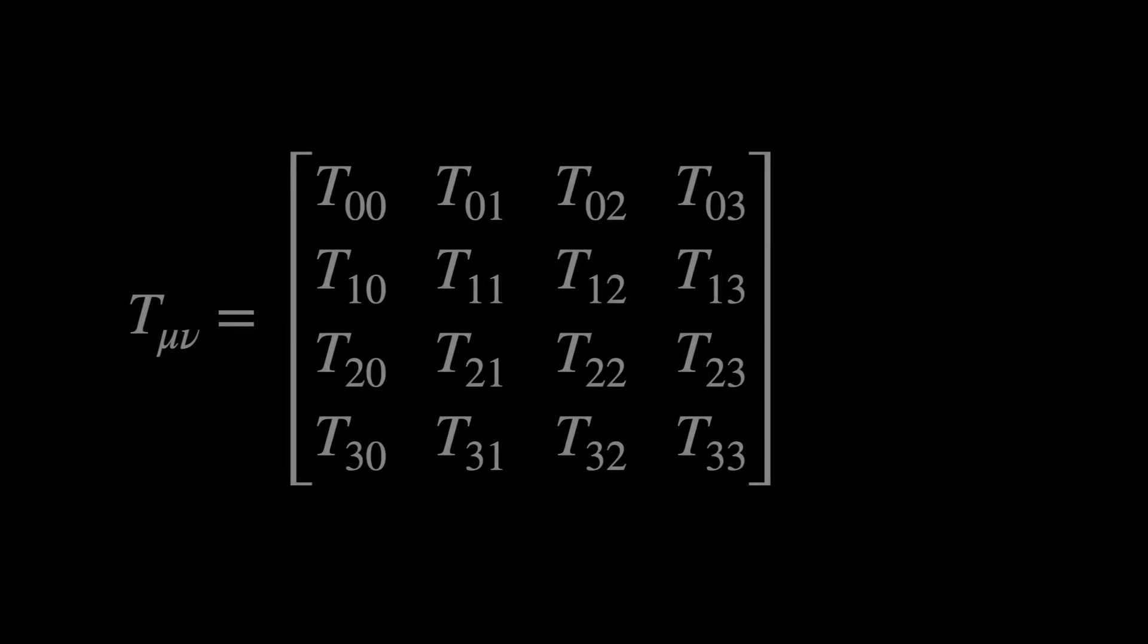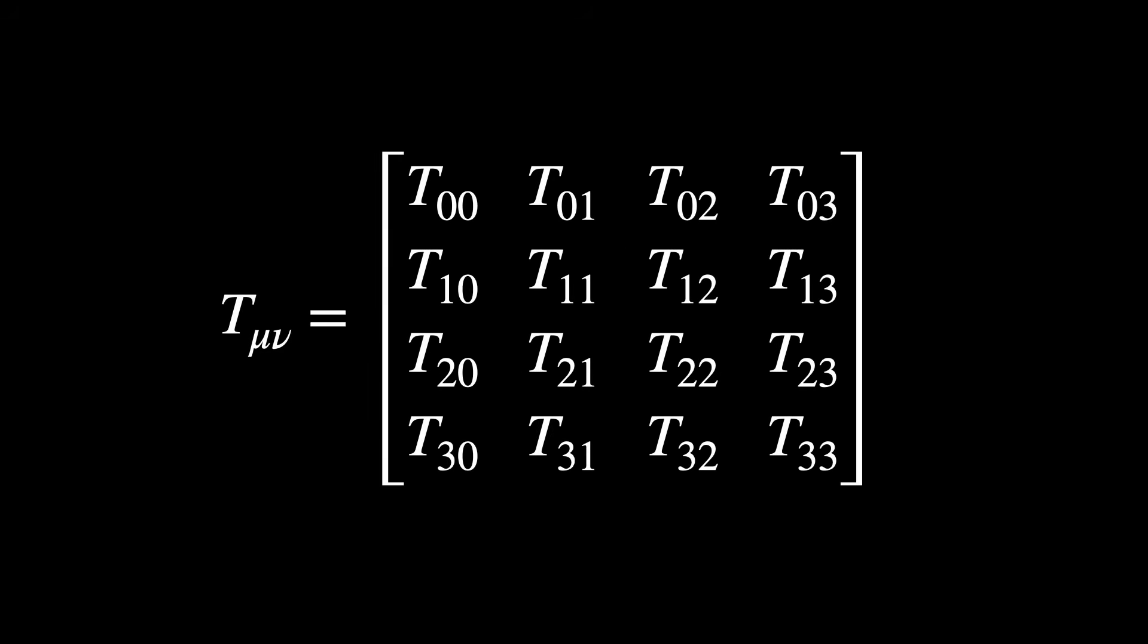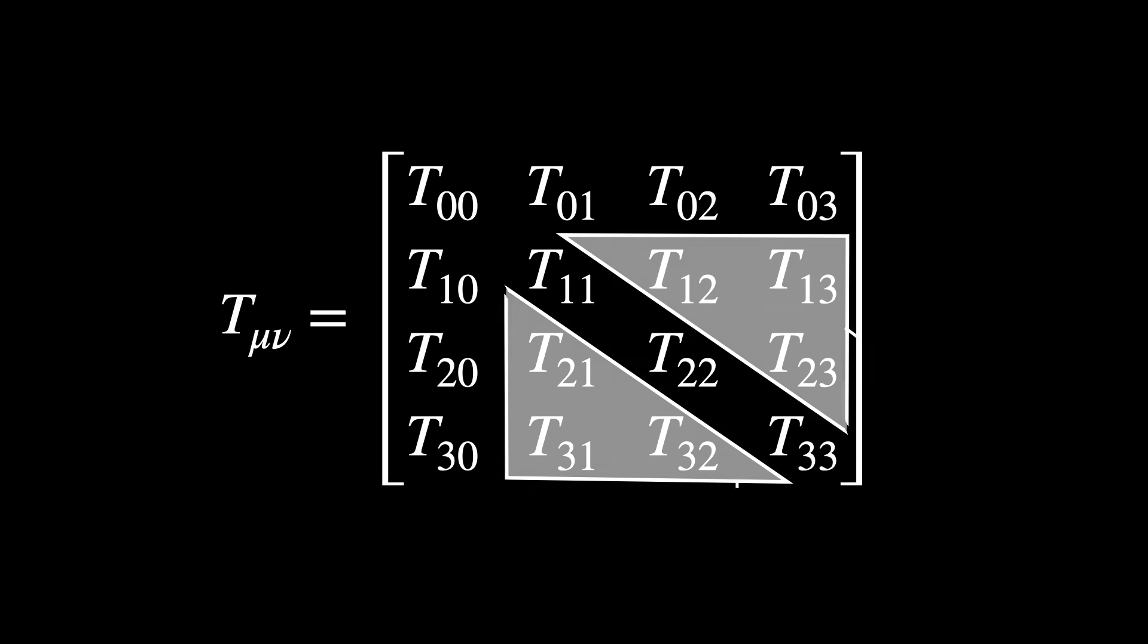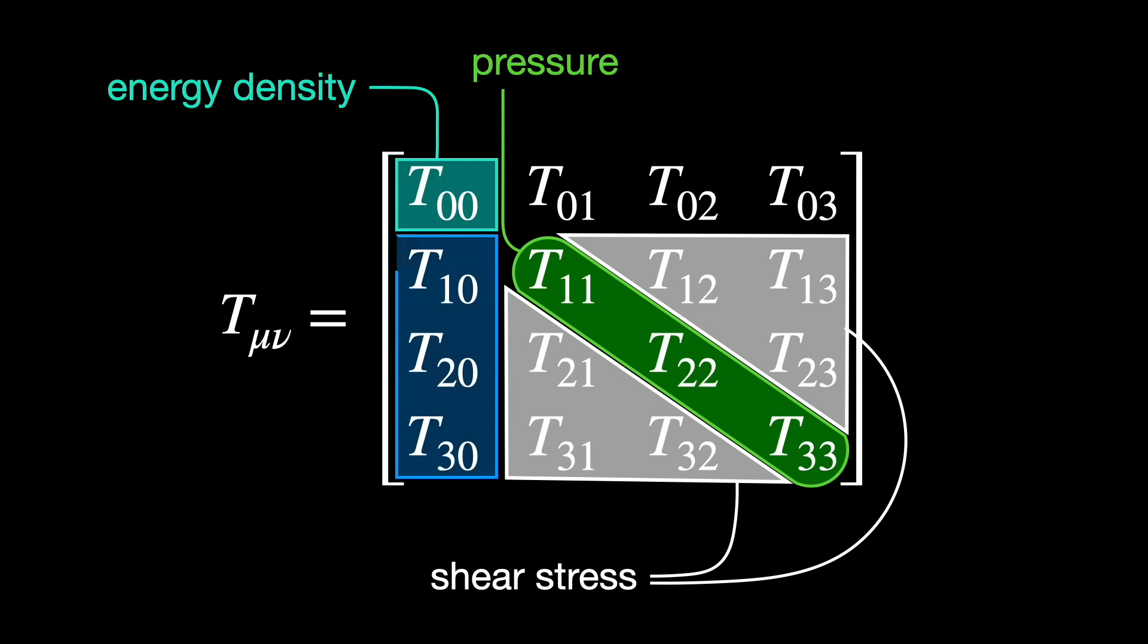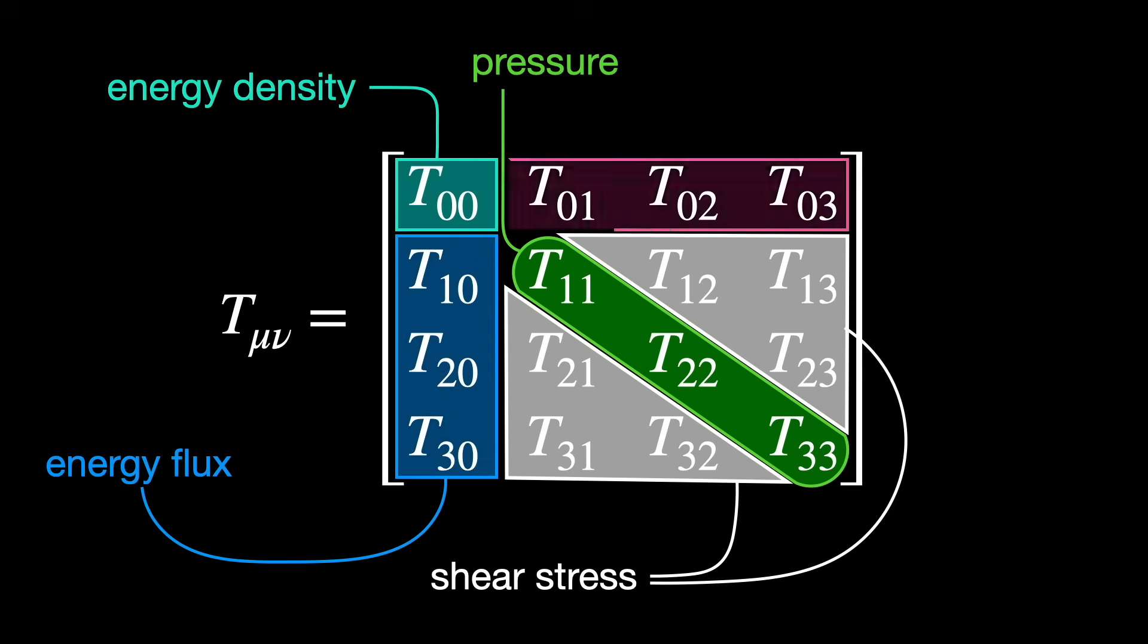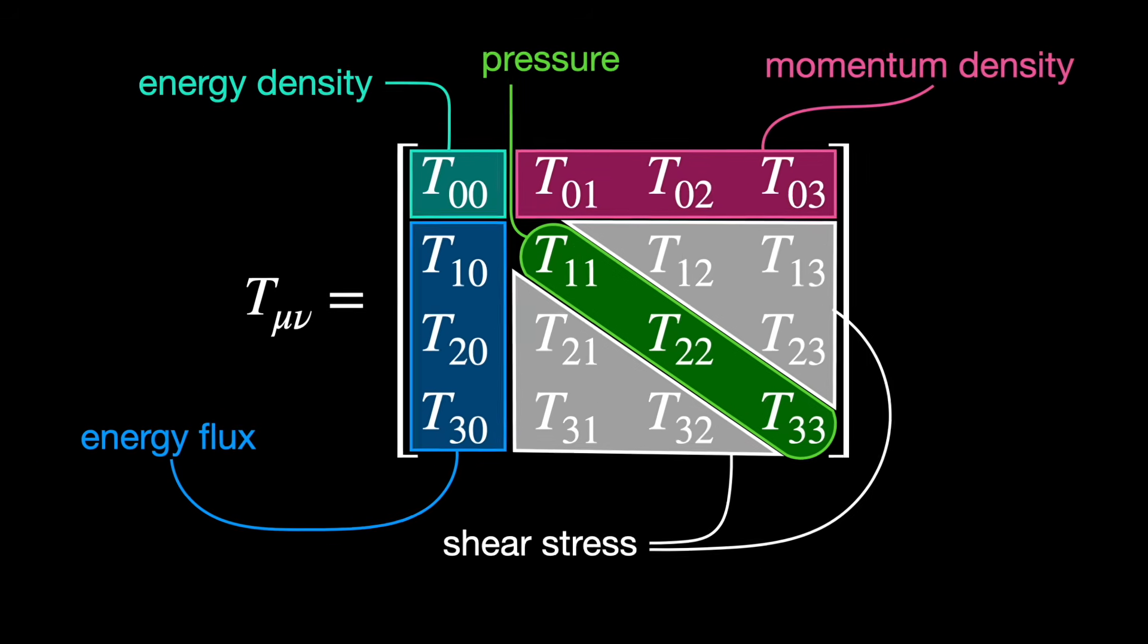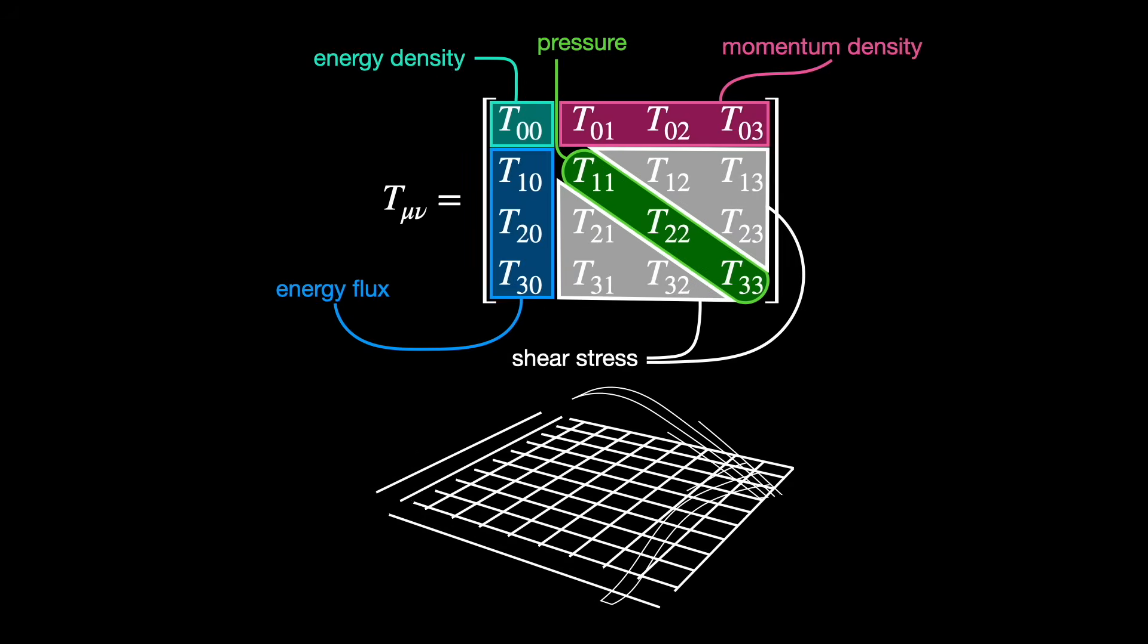That's a very common misconception, that only matter is capable of bending space-time and producing curvature. This tensor tells us a different story. Stress, which is a generalization of pressure, including shear and tension, energy, in the form of matter or radiation, and momentum, that is energy in motion or flow across space. These are all capable of producing space-time curvature.